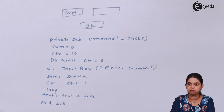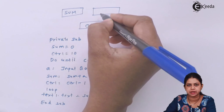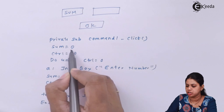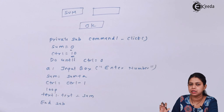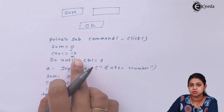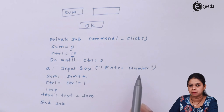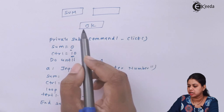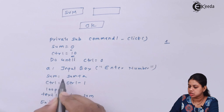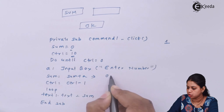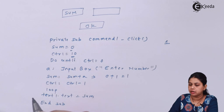Next program: calculate the sum of first 10 numbers. Take one label, one text box, and one command button. Clicking the button displays the sum in the text box. Declare variable sum initialized to zero and control set to 10. Use a Do-Until loop: repeat until control becomes zero.